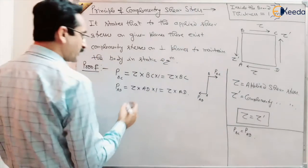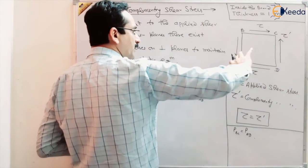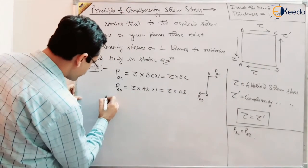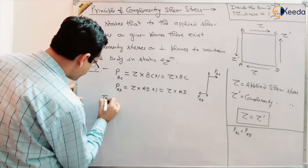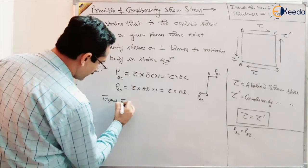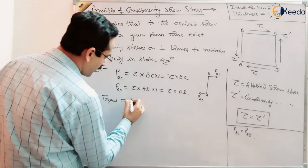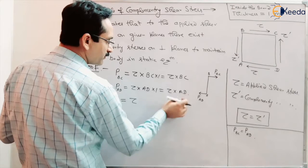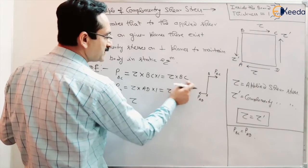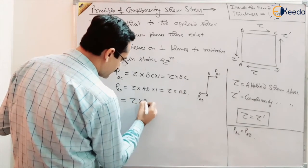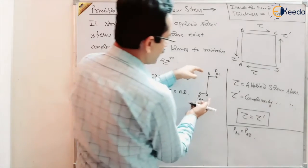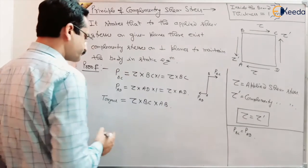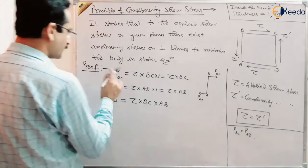What is the torque — what is the moment of these two forces? Torque will be equal to one of the forces, you can take any one. Suppose BC: tau times BC, multiplied by the perpendicular distance AB. So the torque T1 equals tau times BC times AB.